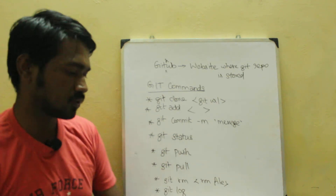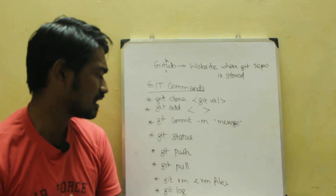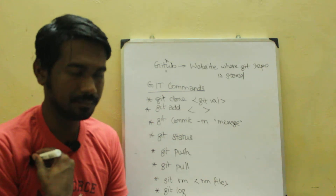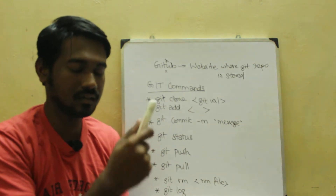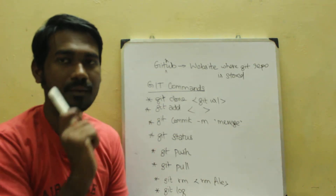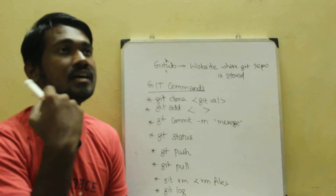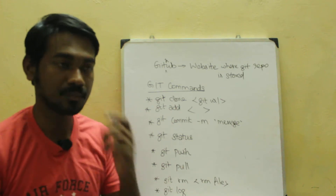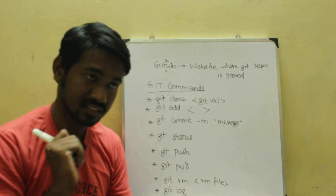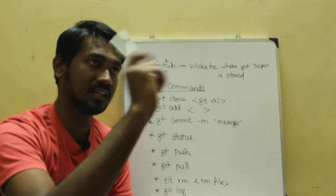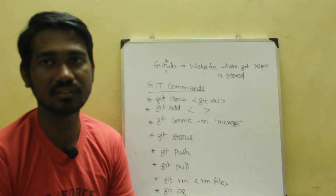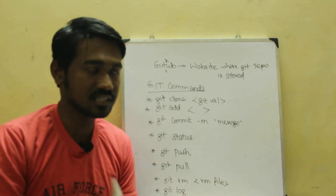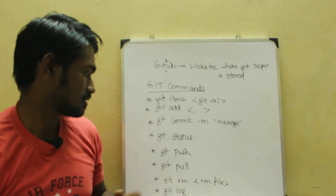Git push and pull: with push, you send your local copy to the central repository. With pull, you download from the central repository to your local copy.